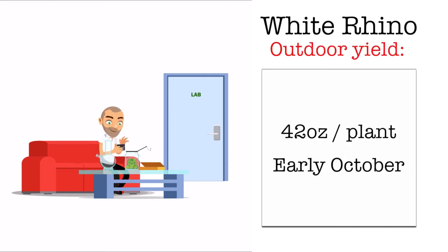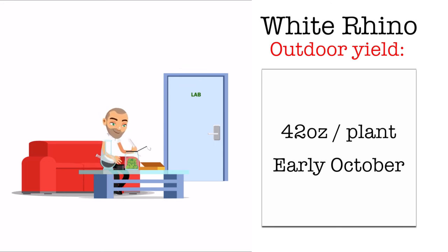Its outdoor yield can be up to 42 ounces per plant, and it's available for harvest in early October.